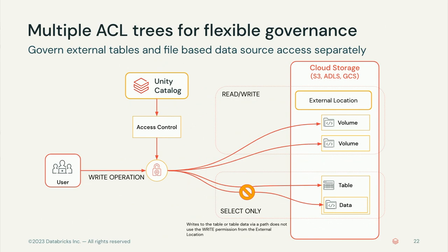With Unity Catalog, external locations and external tables have different ACL trees. For example, I might have read-write access to an external location or the volumes within it, but if I haven't been specifically granted modify access to a table that lives in that external location, I cannot write to it. Users can have access to parts of an external location through volumes while keeping that separate from the tables registered there — important to understand when designing your security model.